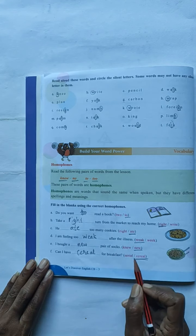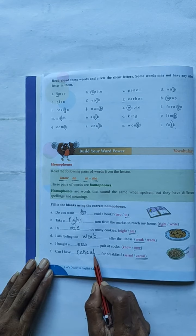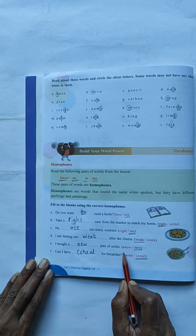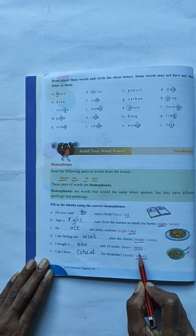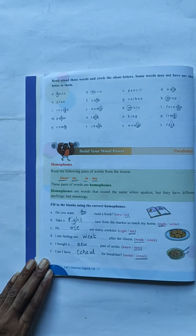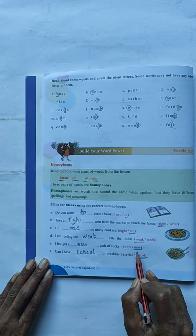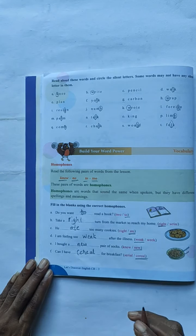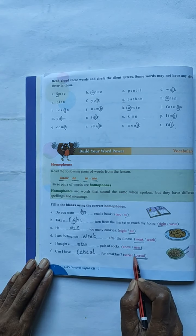I bought a dashed pair of socks. K-N-E-W or N-E-W. Here write N-E-W. New. I bought a new pair of socks.